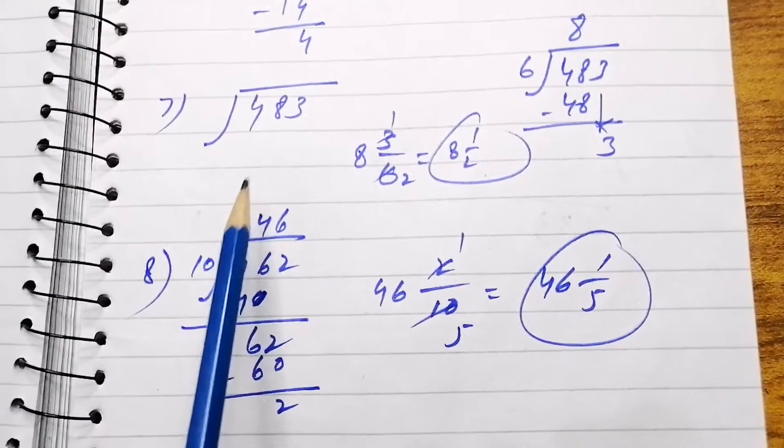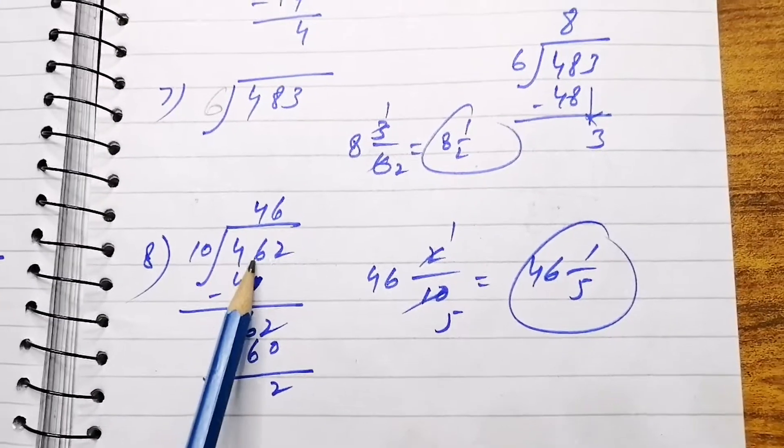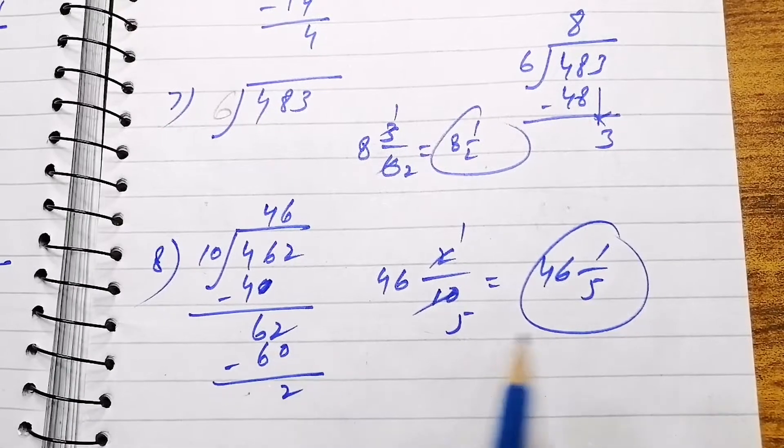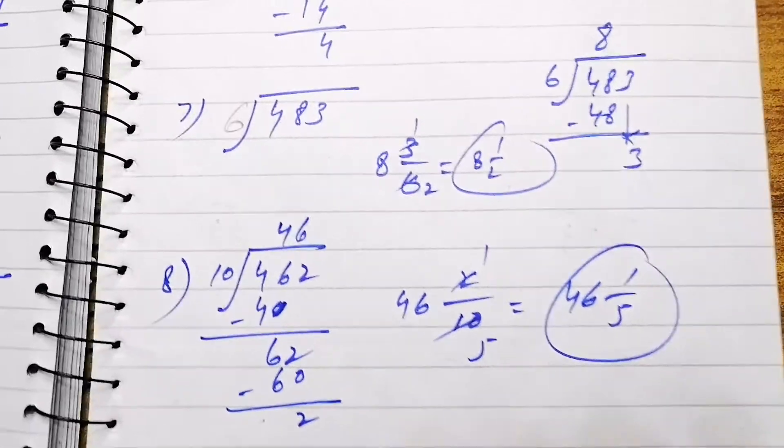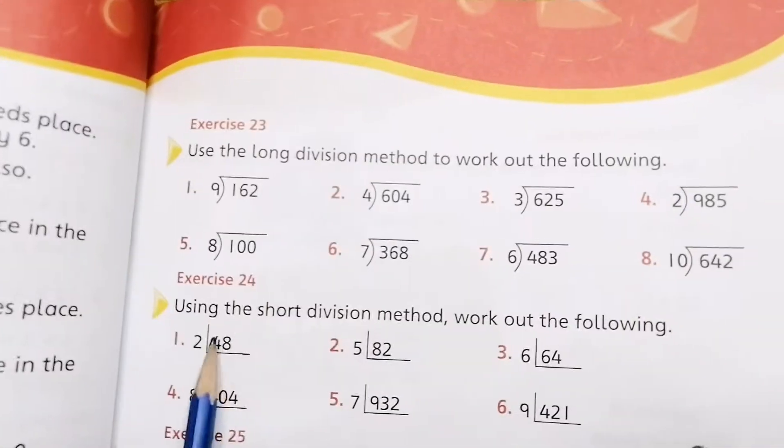483 divided by 6, answer is in mixed fraction. Then 462 divided by 10, answer is again in mixed fraction. You can write in decimal fraction also if you want.